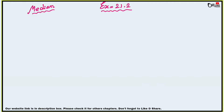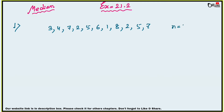You can also visit our website for other chapters. So here the first problem, sum number one: a student scored the following marks in 11 questions of a question paper. The marks are 3, 4, 7, 2, 5, 6, 1, 8, 2, 5, 7. So here the total 11 marks are there, that means n equal to 11.